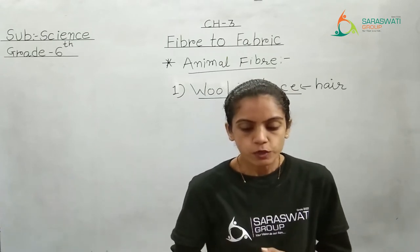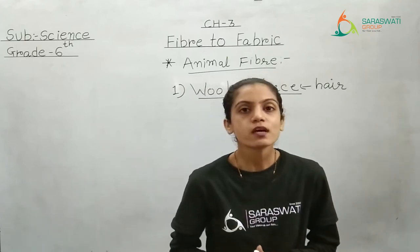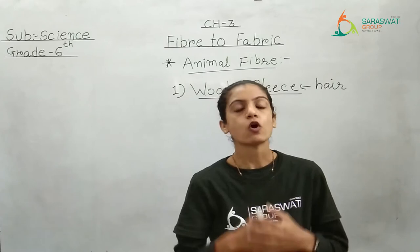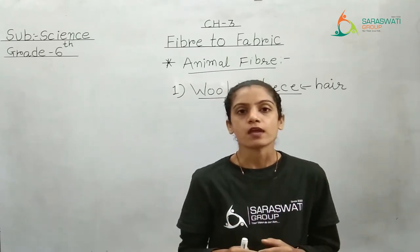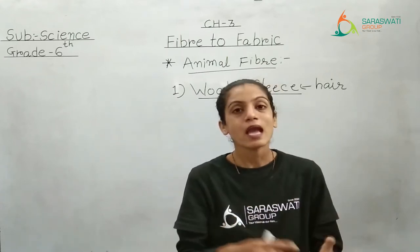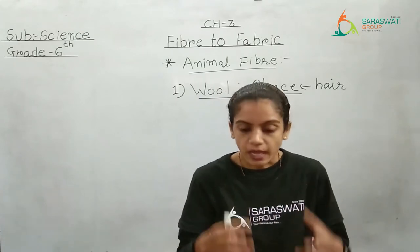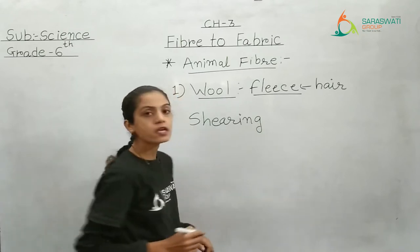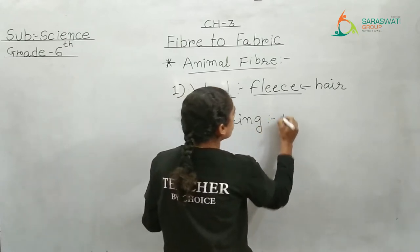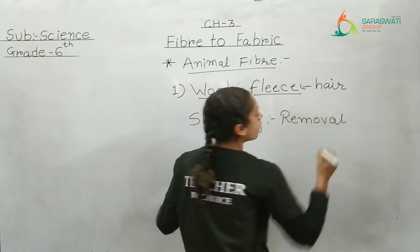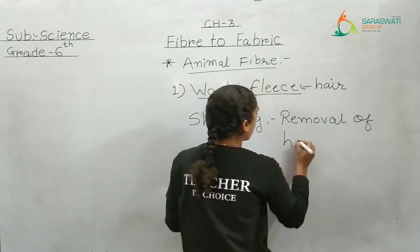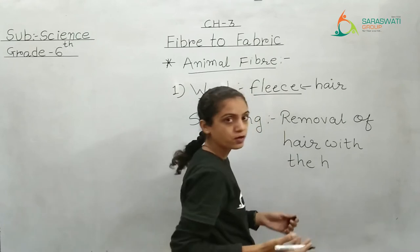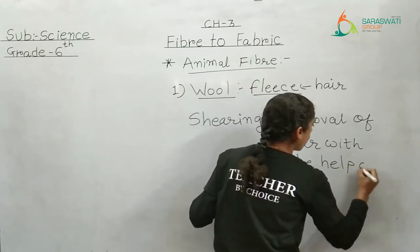The sheep is sheared to obtain the fleece. What is the meaning of sheared? Sheared means removal of hair from the body. You may have seen that humans also remove hair from their body. Same way, the hair present on these animals can be removed, and that procedure is known as the shearing process. Shearing means removal of hair with the help of clippers — not slippers, not flippers, but with the help of clippers.